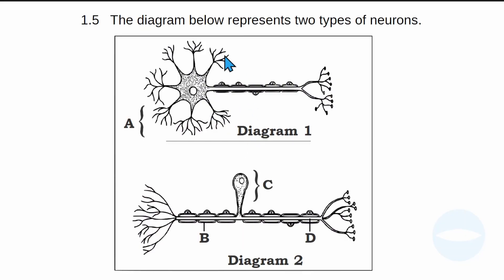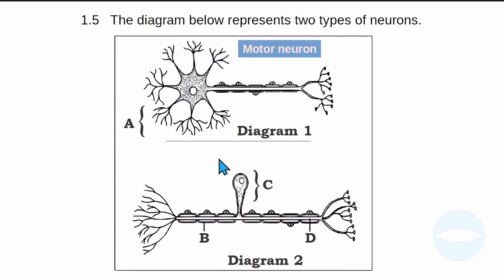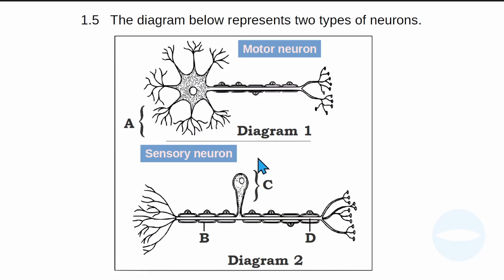So to name these: diagram one is a motor neuron, and diagram two is a sensory neuron. The easiest way of identifying the sensory neuron is by the cell body — if the cell body is on the side, then it is the sensory neuron.